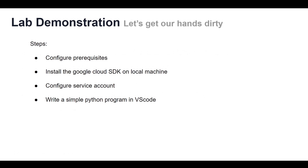Hi, I'm Yafra Fan from Skillcurb. Now we will start working with the Google Cloud SDK. The first step is to figure out our prerequisites and configure them. The next step is to install the Google Cloud SDK on our local machine. Once our SDK is installed, we need to configure our Google Cloud service account and download the credentials. As an example, we will use VS Code to use the Python client library for accessing BigQuery. Now let's get started.